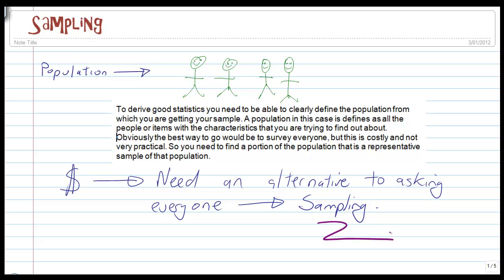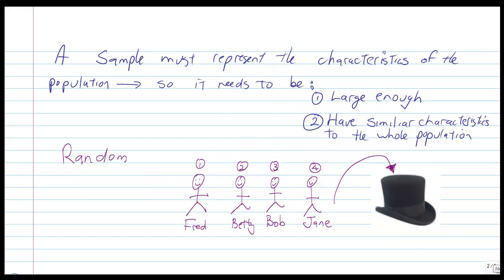There are a couple of ways you can sample but I just want to talk about the theories behind your sampling. So a sample must, a sample that you choose has got to represent the characteristics of the population. So if you've got a gender split in your population then you need to make sure that the sample is representative of that. If you've got more boys than girls in the population, then in the sample you've got to have more boys than girls because they're representative.